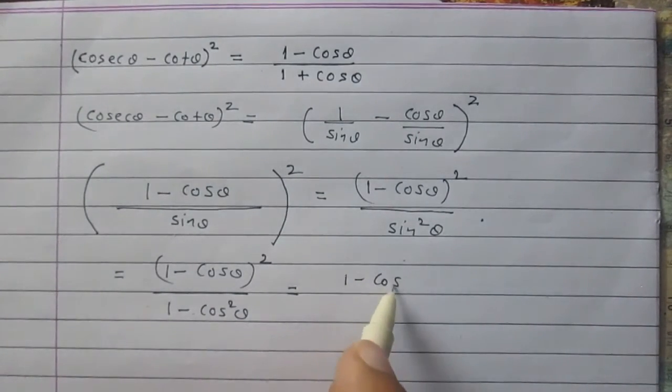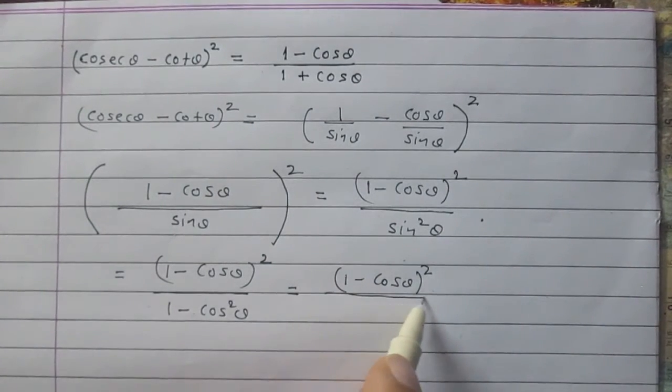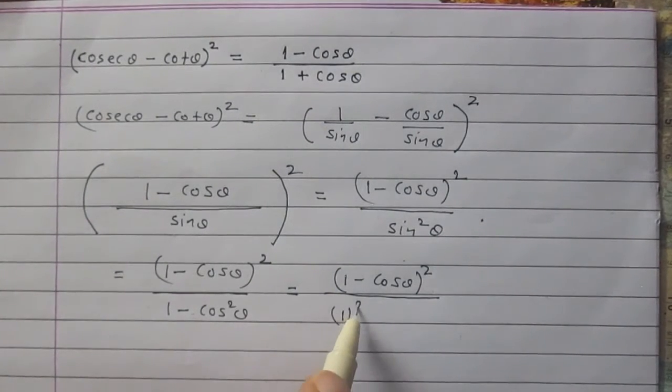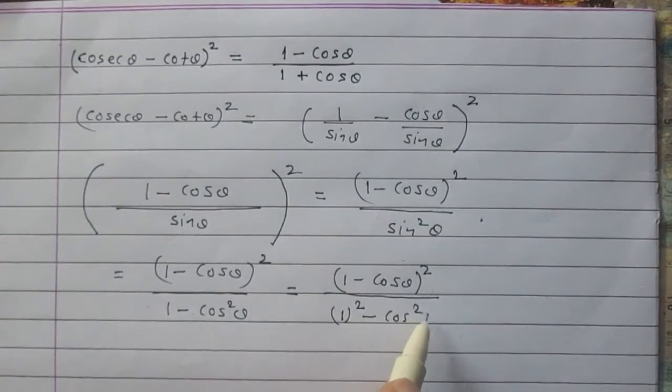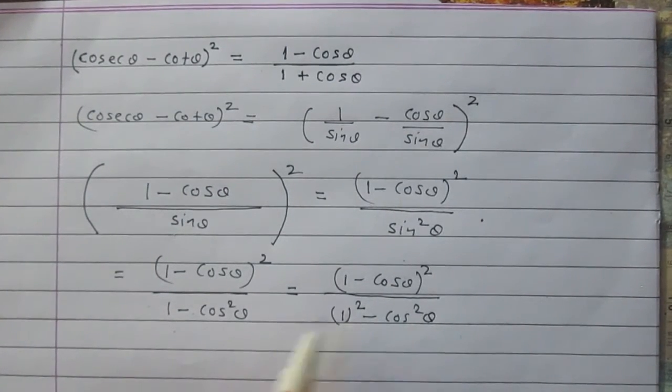Numerator as it is, 1 minus cos theta whole square. Denominator can be written as 1 square minus cos square theta, which is nothing but 1 minus cos square theta, because 1 square is 1 itself.